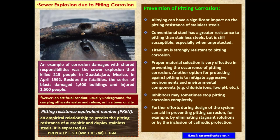We will deal with prevention of pitting corrosion. First, alloying can have a significant impact on the pitting resistance of stainless steels. Second, conventional steel has greater resistance to pitting than stainless steels, but is still susceptible, especially when unprotected. Third, titanium is strongly resistant to pitting corrosion.